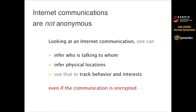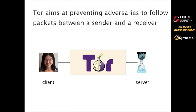The problem of anonymity on the internet roots back to the design of the internet protocol itself. Indeed, IP does not provide anonymity at all, and anyone able to eavesdrop on internet communication can identify who is talking to whom simply by looking at the IP headers. Also, since an IP address serves both for identifying and locating an interface, an eavesdropper can also infer the physical locations of the communication entities. From there, it is easy to track user behavior and interests — this problem remains even if the communication is encrypted.